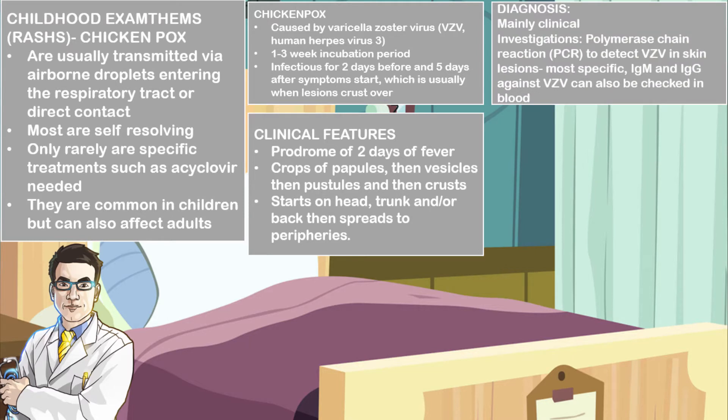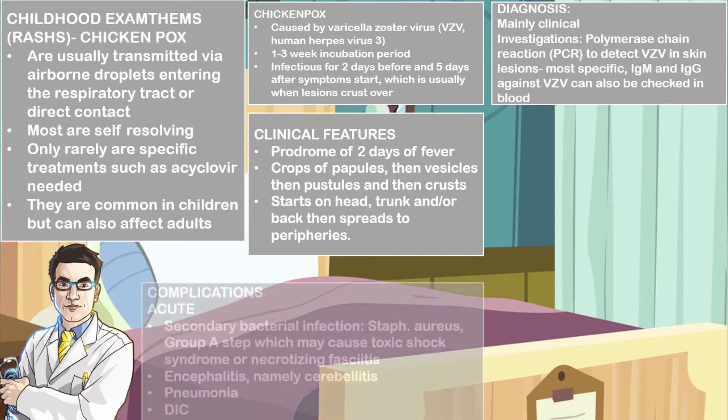Diagnosis is mainly clinical, but you may do some investigations such as a polymerase chain reaction, or PCR, to detect varicella zoster virus in skin lesions. This is usually the most specific. You may also order blood investigations such as immunoglobulin M and immunoglobulin G against varicella zoster virus, which may be checked in the blood.